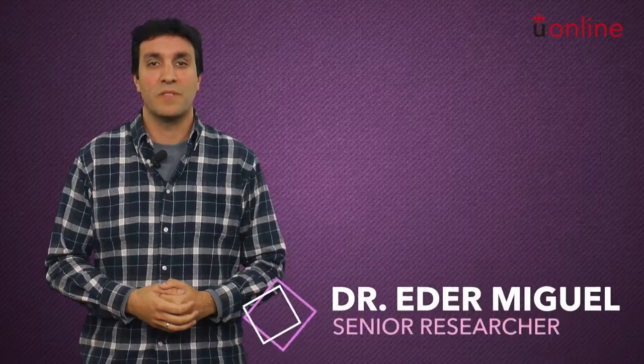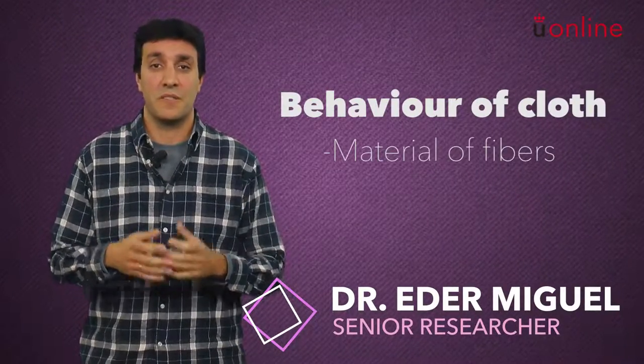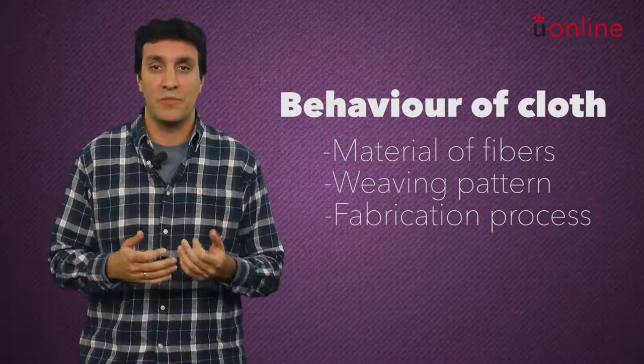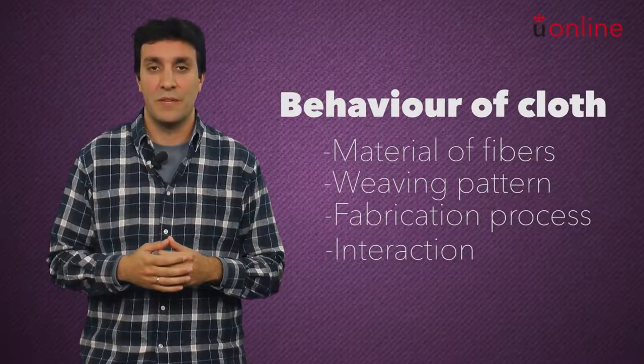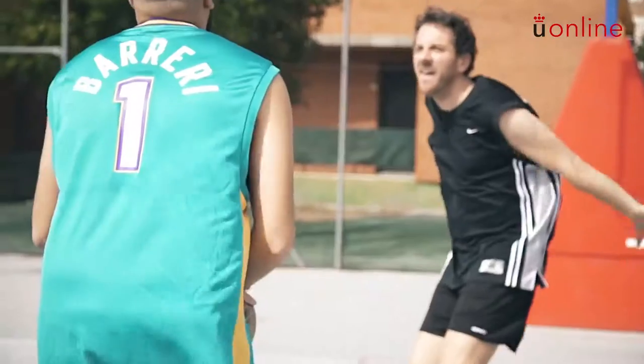Cloth animation is a very challenging problem. The behavior of cloth is defined by many different parameters, such as the material of fibers, the weaving or knitting pattern, the fabrication process, or the interaction between fibers. These parameters interact and create the characteristic complex behavior of cloth.